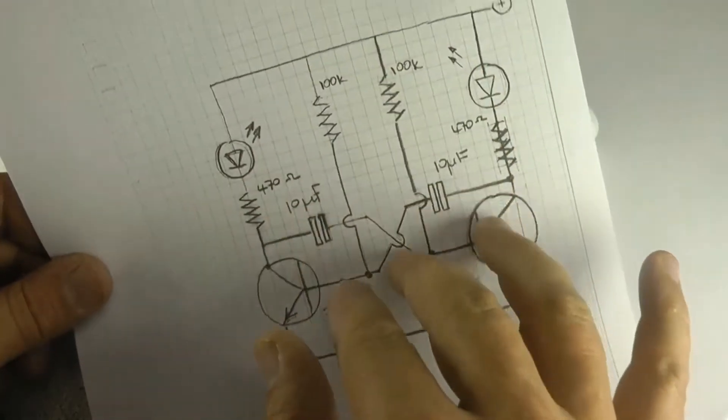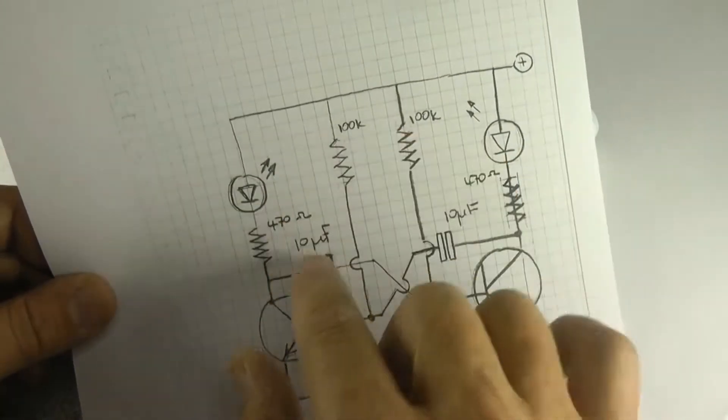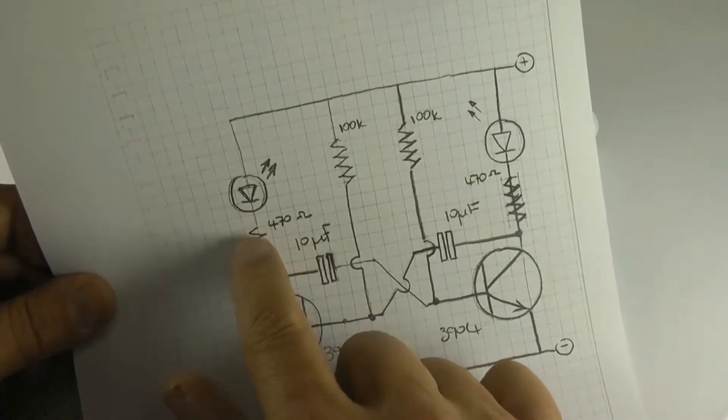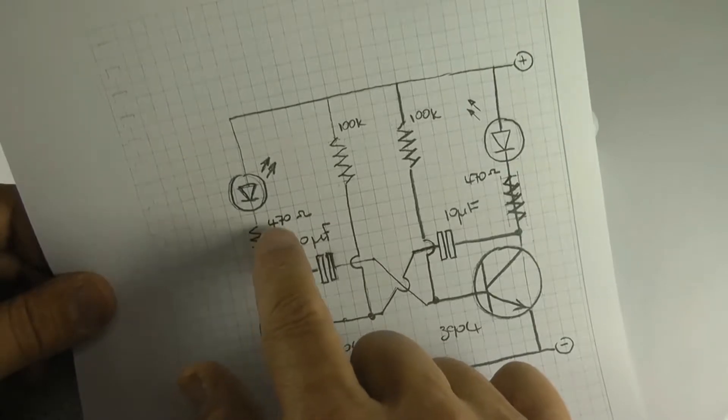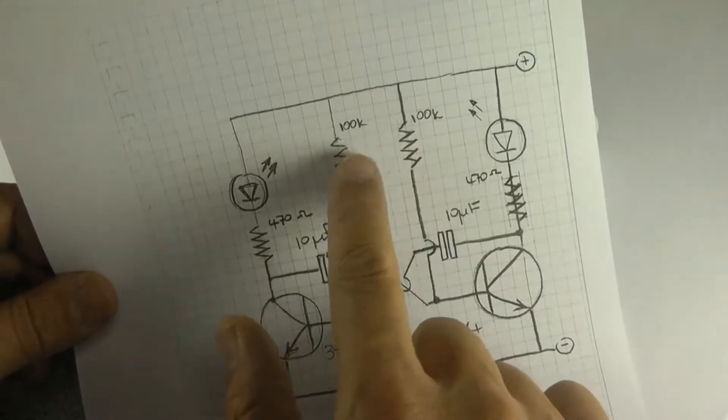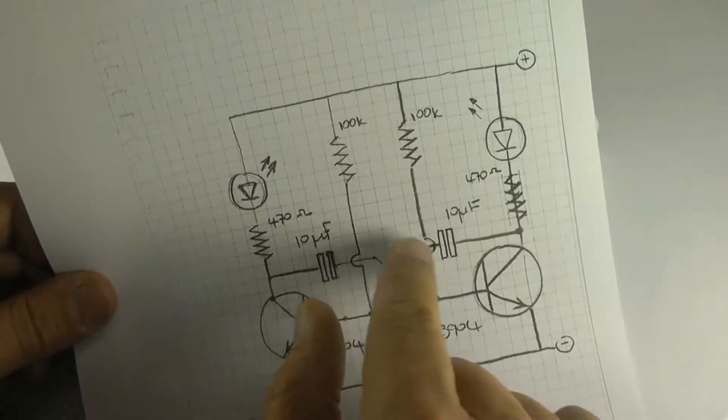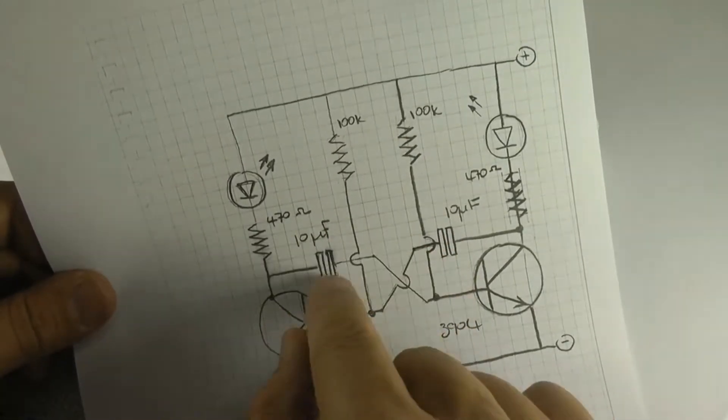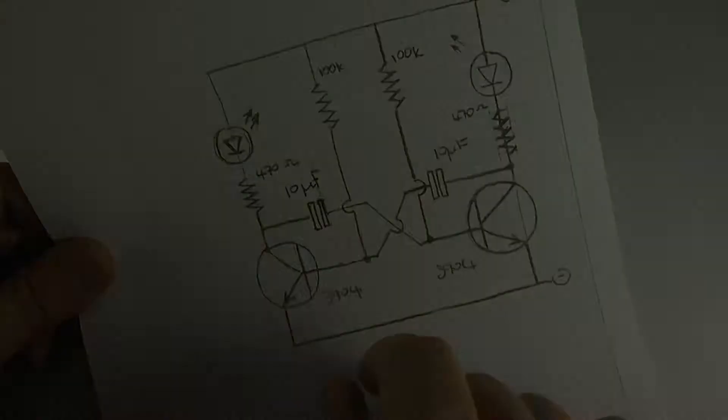Here's the schematic diagram. You'll see here we've got 470 ohm current limiting resistors, that's fine, you can use 680 ohm or 1 kilo ohms, and we've got 100 kilo ohm resistors here, and 10 microfarad electrolytic capacitors over here, and 2 NPN transistors.